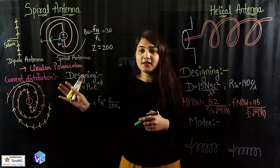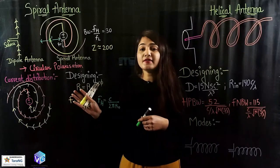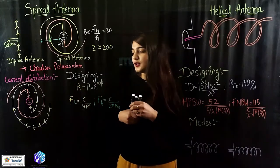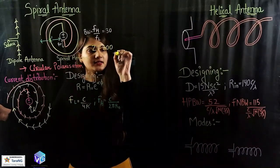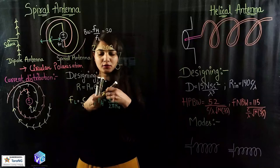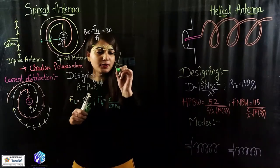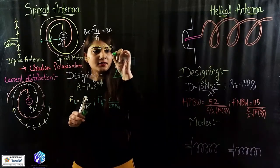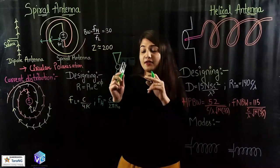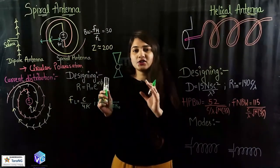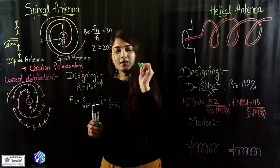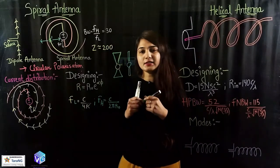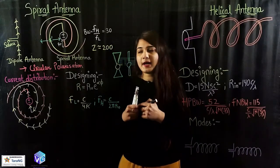This is actually the log-periodic spiral antenna. We can have the Archimedean spiral antenna also. In the log-periodic spiral antenna we have a log-periodic structure which we are turning in the form of a spiral antenna. When I have a linear structure, I can turn this linear structure also in the form of a spiral antenna — this would be my Archimedean spiral antenna.